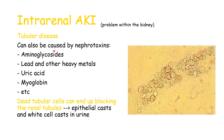Tubular disease can also be caused by nephrotoxins — for example, aminoglycosides, lead or other heavy metals, uric acid, myoglobin, and other toxins. Importantly, dead tubular cells end up blocking the renal tubules because when they die, they fall off into the lumen. These form epithelial casts and white cell casts that you can see in urine, essentially forming the shape of the renal tubule.